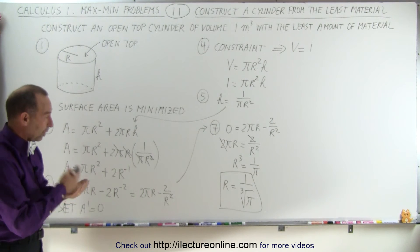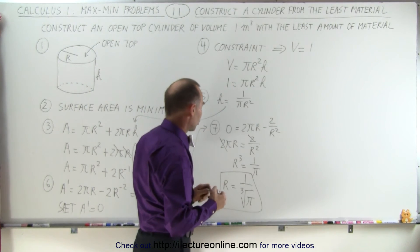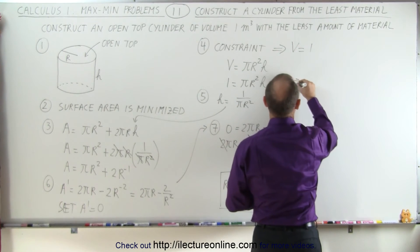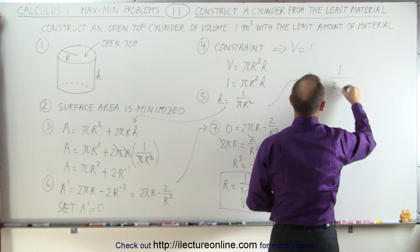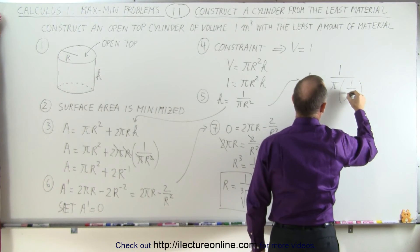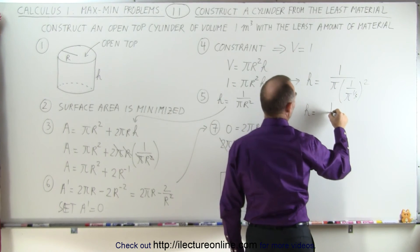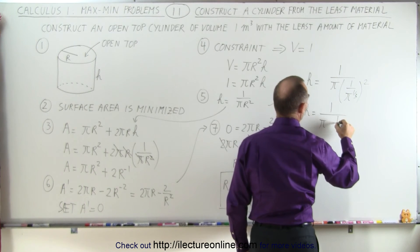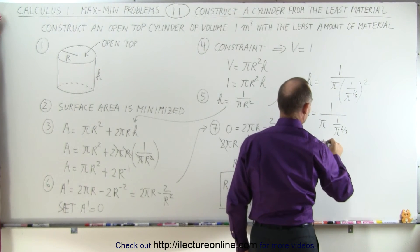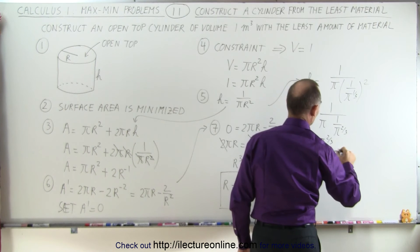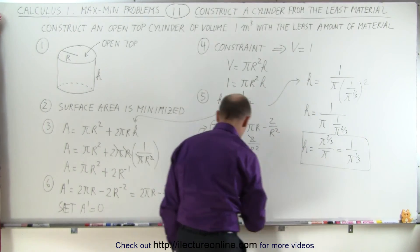So once we've determined one of the two variables, now we need to also determine the other variable, which is h. And h is defined as 1 over pi r squared. So we plug in what r is equal to. And so we have h is equal to 1 divided by pi times the quantity 1 over pi to the 1 third power, and we need to square that. So h is equal to 1 divided by pi times 1 over pi to the 2 thirds power, which can be written as pi to the 2 thirds power divided by pi, which is 1 over pi to the 1 third power. And so it looks like h has the exact same value as r.